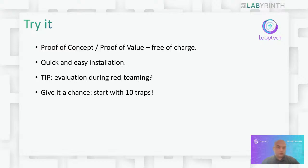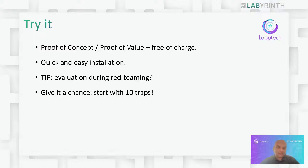You can do a proof of concept — Looptek can support you so you can deploy the solution and play with it. My big advice is to test the solution during an audit or red teaming activity — don't tell the red teamers about the fake systems, just to prove to yourself that this kind of tool is effective. Red team people will not recognize our solution in the network. Licensing is very basic — you calculate the number of traps you need and we sell them in packages of 10 traps. For details, please contact the Looptek team for pricing, installation, and support.